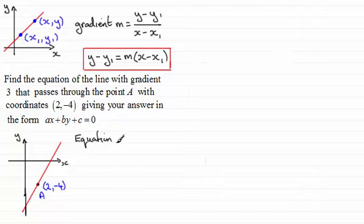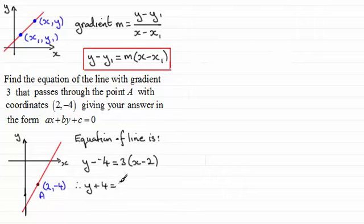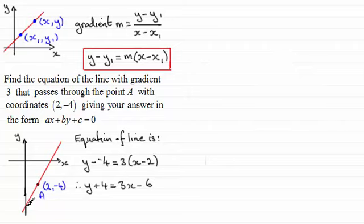Equation of line is: y minus y1 — y1 is minus 4, so it's y minus (minus 4) — equals m, the gradient, which is 3, multiplied by x minus x1, and x1 is 2. Cleaning this up, we get y plus 4 equals 3x minus 6. If we wanted to put this in the form y equals mx plus c, subtract 4 from both sides to get y equals 3x minus 10. And you can see that looks good from the drawing — minus 10 is where it intercepts the y-axis, so that's a valuable check.